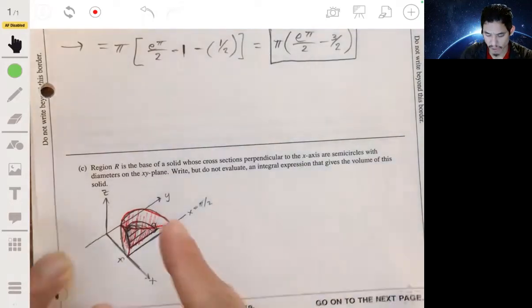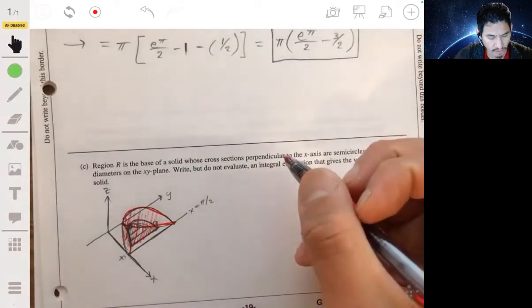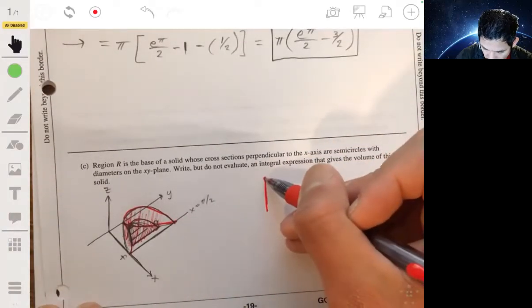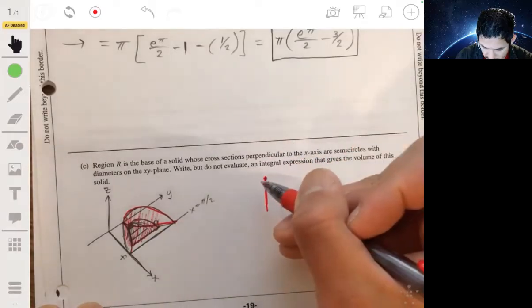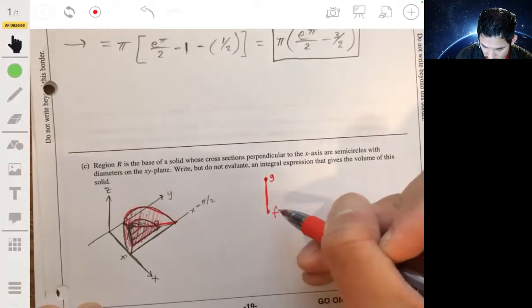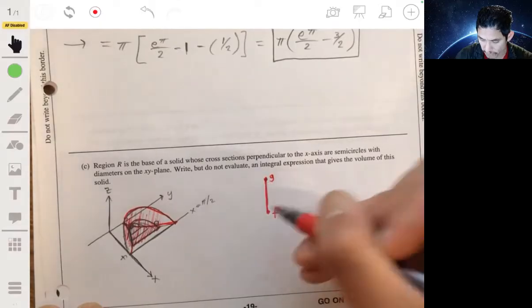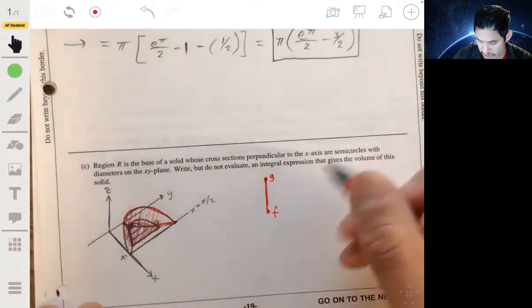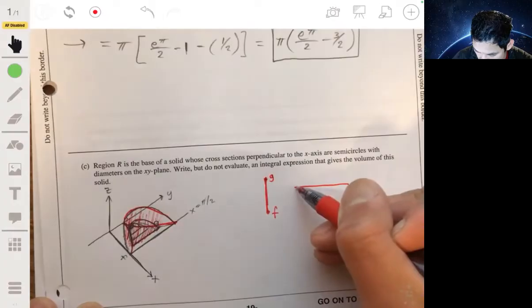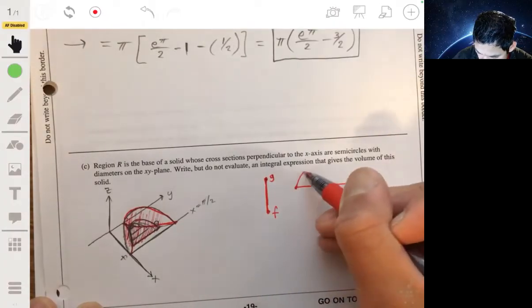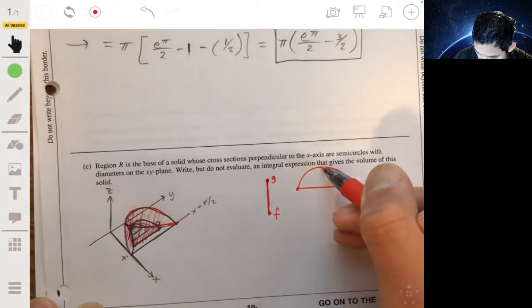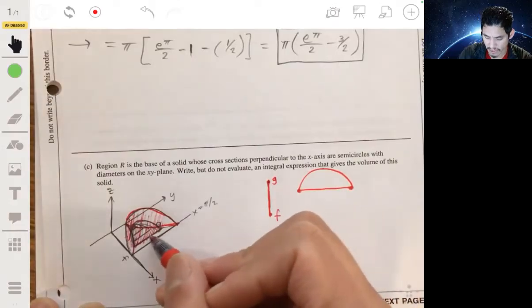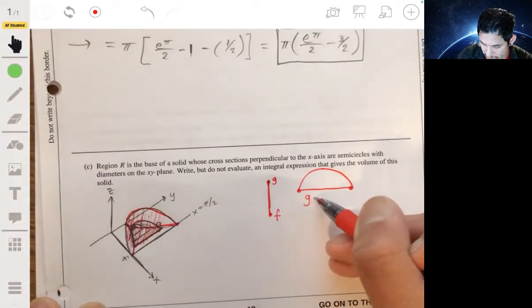Anyways, so one cross section would be again a vertical line—the vertical line, the top is on the g function, the bottom is the f function. So the base of this, if you look at it as a semicircle, is this part down here. We're looking at this sort of thing. To get this length, so to get the length of the base, you would do G minus F. This bottom part would be G minus F.